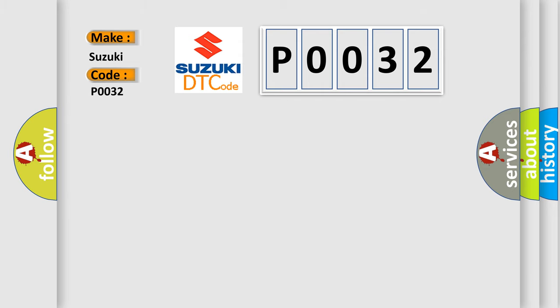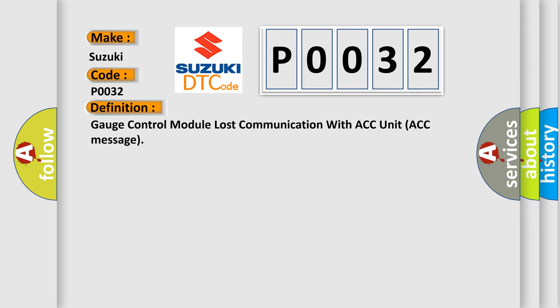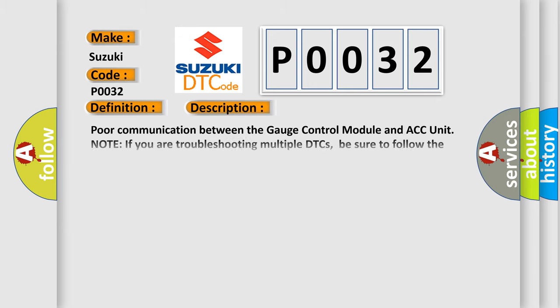The basic definition is: Gauge control module lost communication with ACC unit ACC message. And now this is a short description of this DTC code: Poor communication between the gauge control module and ACC unit.